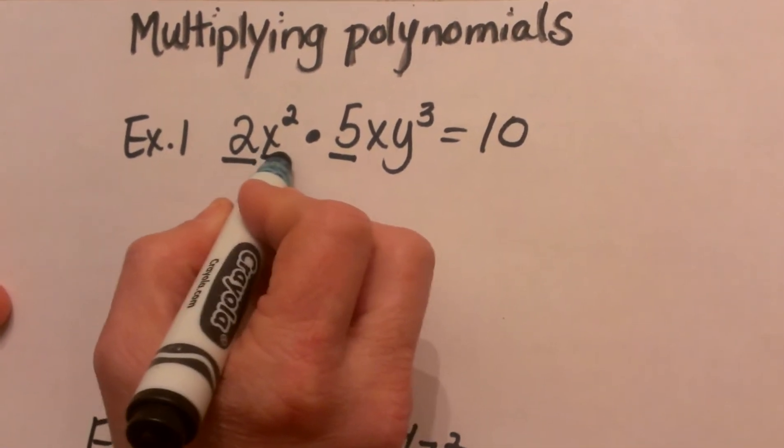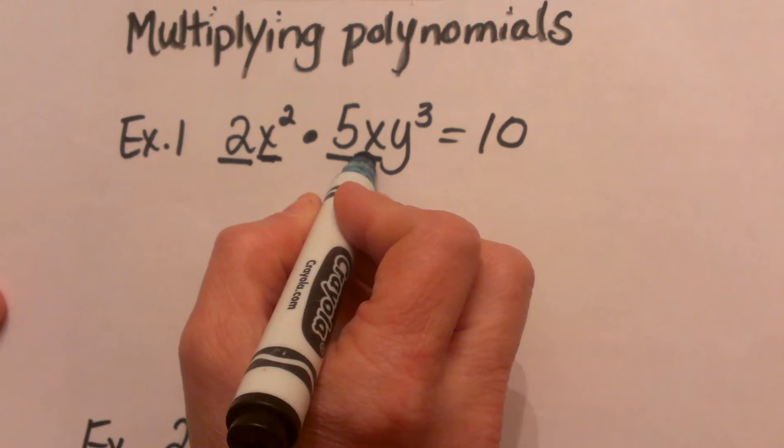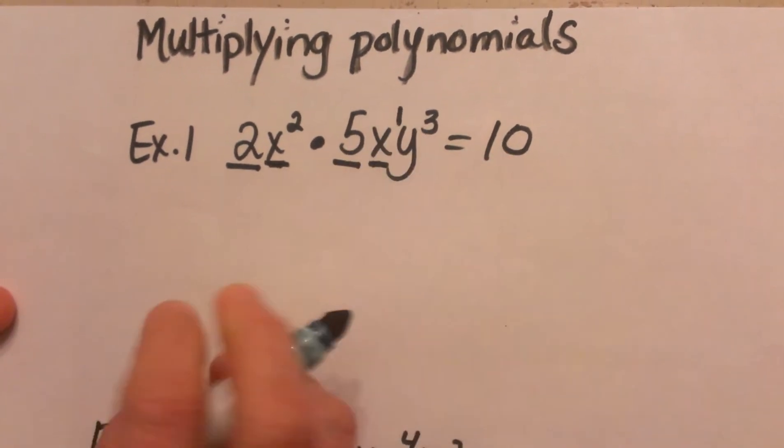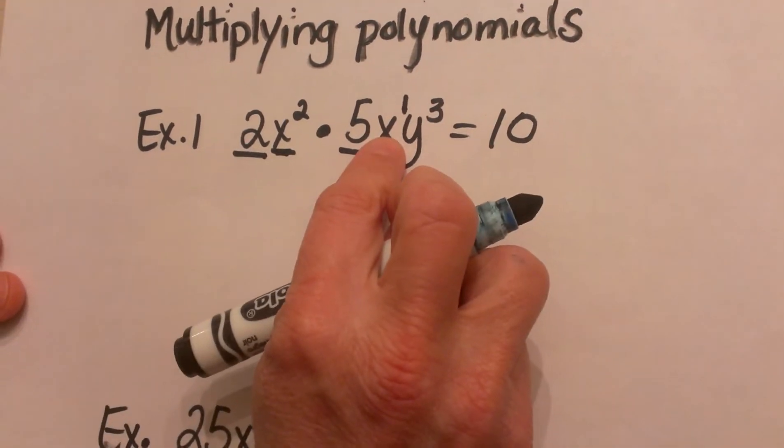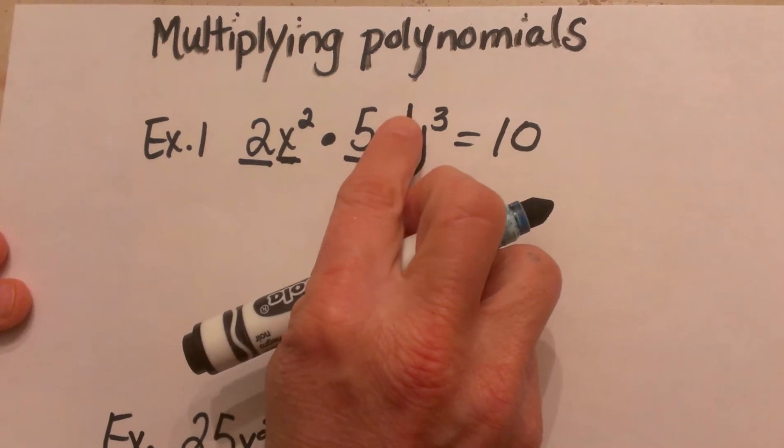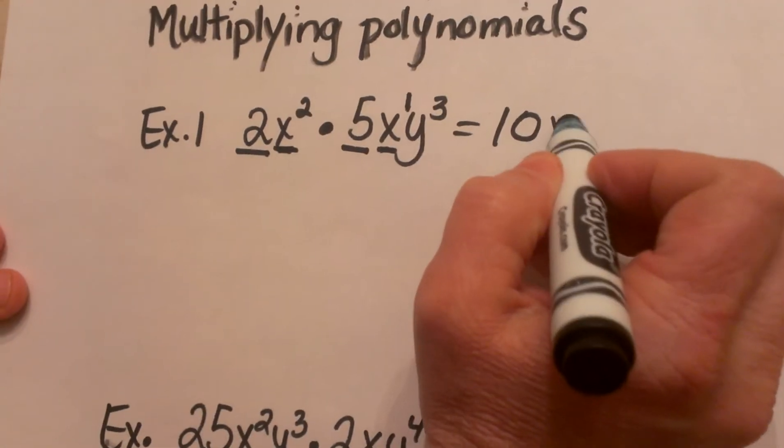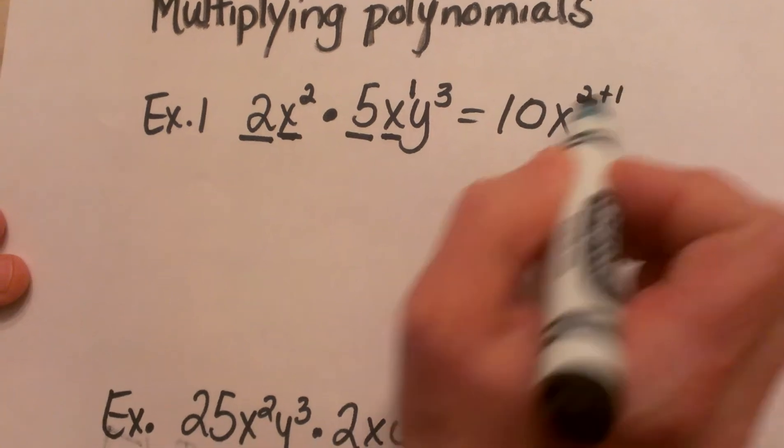Then I am going to take my x squared and my x over here and I am going to write in the first power because any time you have a variable without a degree it is to the first power. We are going to take those exponents and add them together.